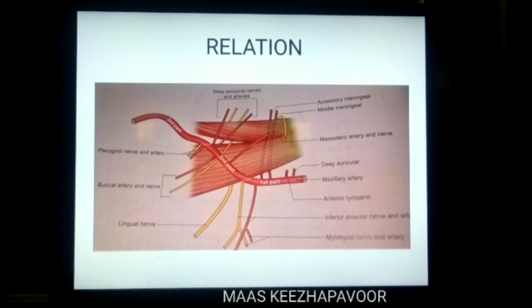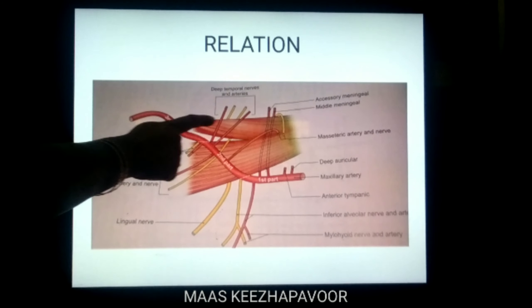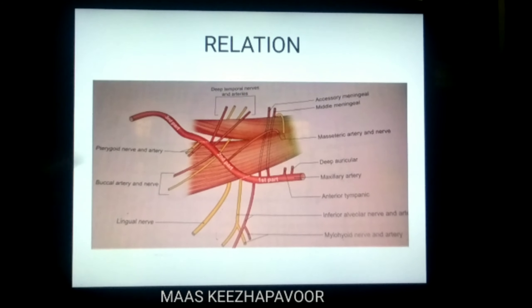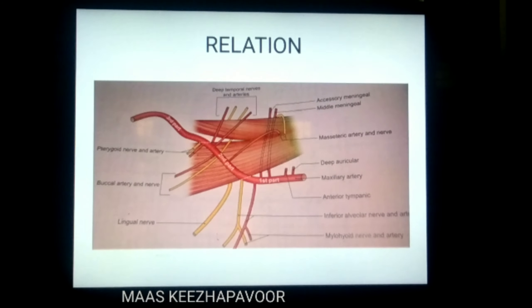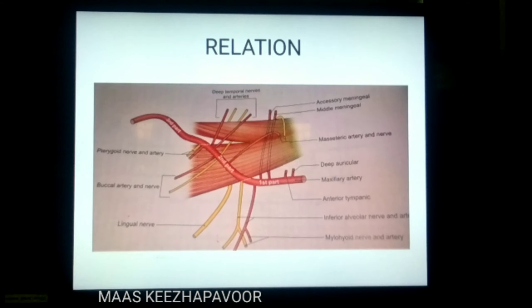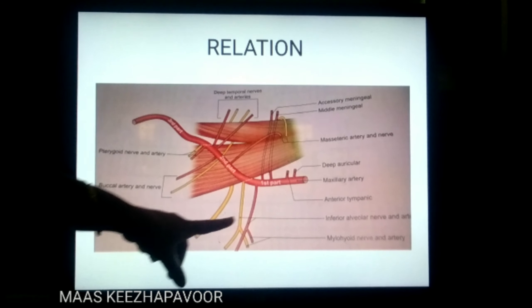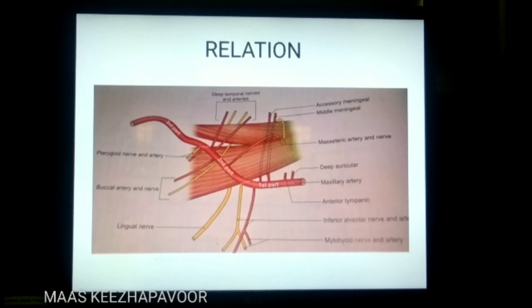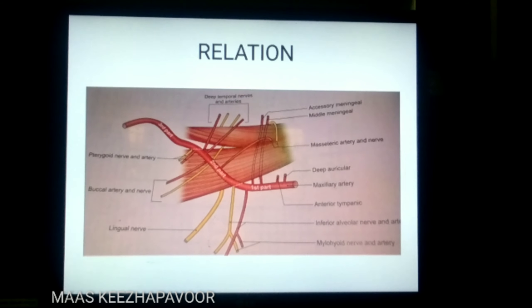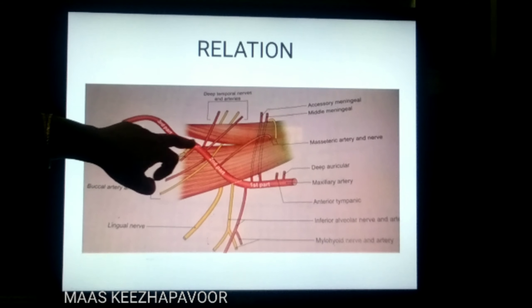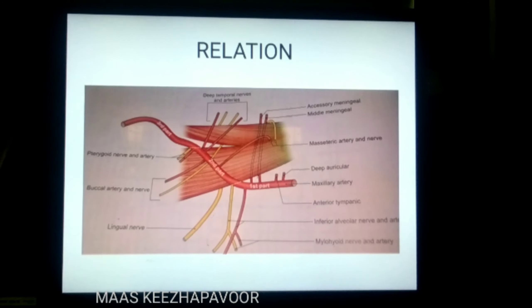Relations of the lateral pterygoid muscle — look at the picture. From the upper border of the lateral pterygoid muscle, the deep temporal nerves and vessels, and also the masseteric nerve and vessels, are emerging out. From the lower border of the lateral pterygoid, the lingual nerve and inferior alveolar nerve are emerging. Between the two heads of lateral pterygoid, two structures are passing: one is the maxillary artery, and the other one is the long buccal nerve.